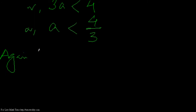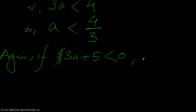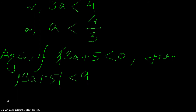Now we consider when the term inside the mod is negative, that is when 3a plus 5 is negative. Then mod of 3a plus 5 less than 9 implies minus of 3a plus 5 is less than 9.